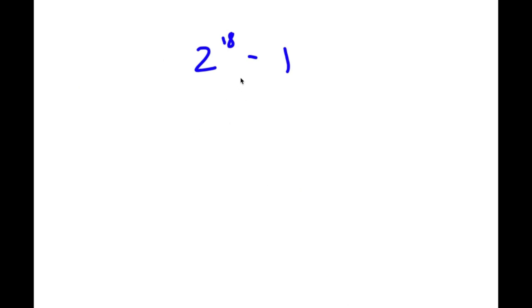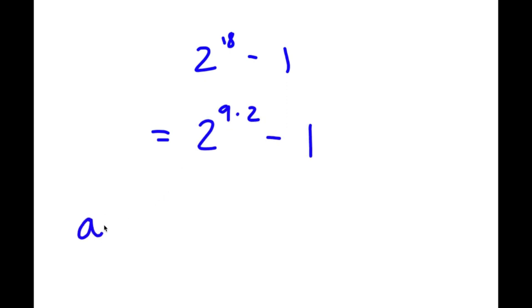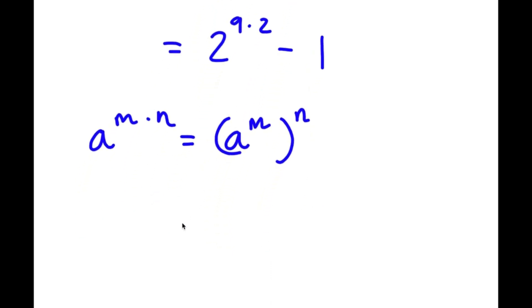In this problem, I have 2 to the power of 18 minus 1. To start, 2 to the power of 18 — well, 18 is the same thing as 9 times 2. So I have 2 to the power of 9 times 2 minus 1. If I have something in the form a to the power of m times n, this is the same thing as a to the power of m to the power of n. So 2 to the power of 9 times 2 equals 2 to the power of 9 to the power of 2.